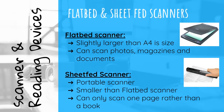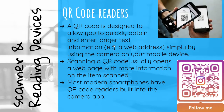Flatbed and sheet-fed scanners: A flatbed scanner is slightly larger than A4 in size and can scan photos, magazines, and documents. A sheet-fed scanner is portable, smaller than a flatbed scanner, and can only scan one page at a time rather than a whole book.